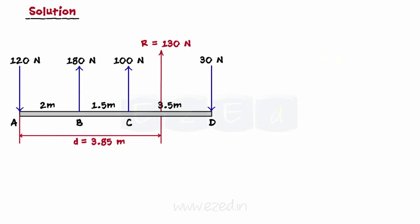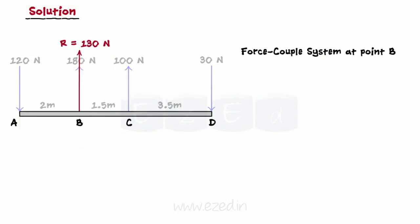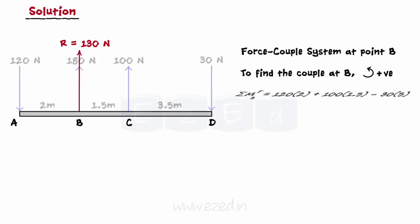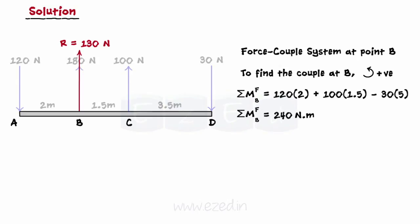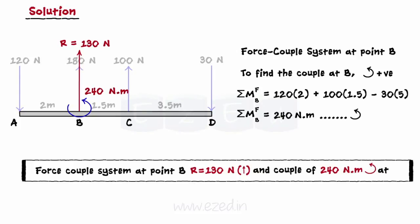Now, let us replace the entire system by a force-couple system at point B. The single force acting at B would be the resultant, that is 130 N. To find the couple at B, add up moments of all forces about point B with the sign convention as anticlockwise positive. On calculating, it is found to be 240 N meters in anticlockwise sense. Thus, the force-couple system at point B is defined by the force of 130 N and an anticlockwise moment of 240 N meters.